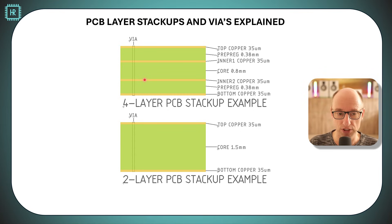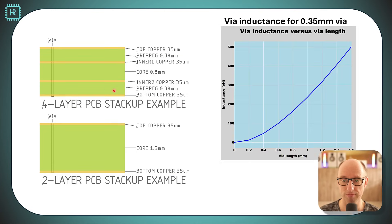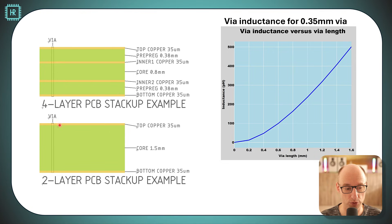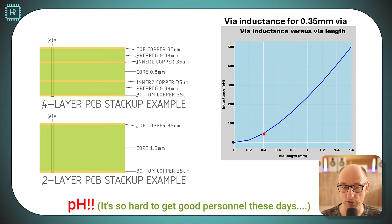Now the VIA impedance heavily depends on the board stack up. Here we see the VIA inductance versus the VIA length. On a two layer board the VIA length is roughly 1.5 to 1.6 millimeters which ends up being 500 picohenries. On a four layer board we can put the ground layer on the second layer and our VIA length would be just 0.38 millimeter, so that would be 47 nanohenries.